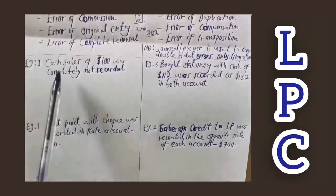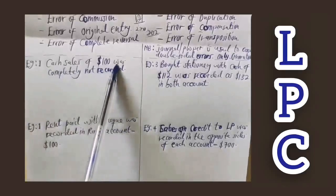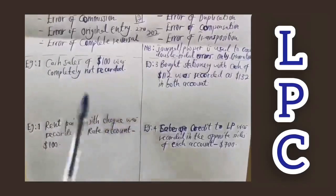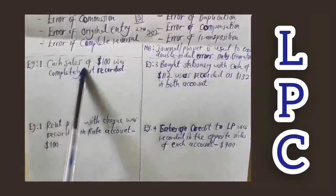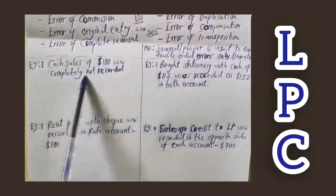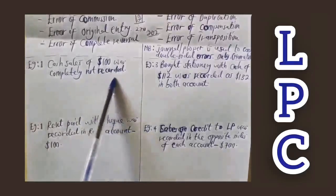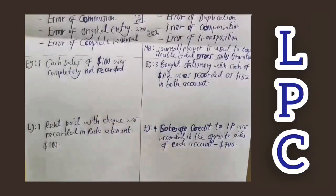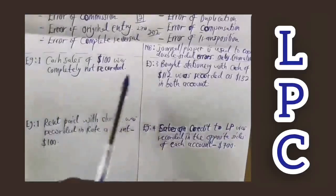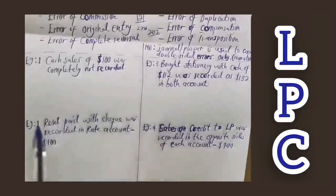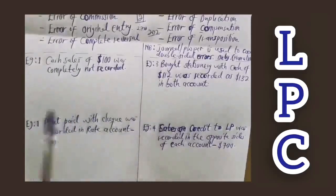Example one: cash sales of $100 was completely not recorded. Which type of error is this? You can tell me in the comment section below. This is an error of omission, because the transaction was completely not recorded at all. Errors of omission are general double-sided errors and are corrected using the journal.